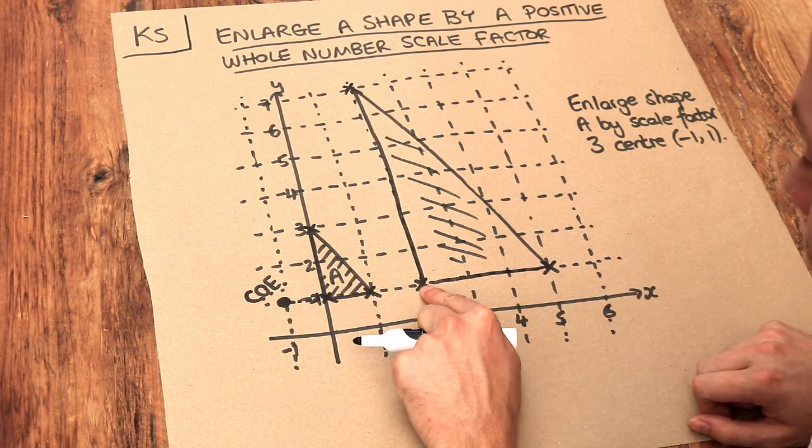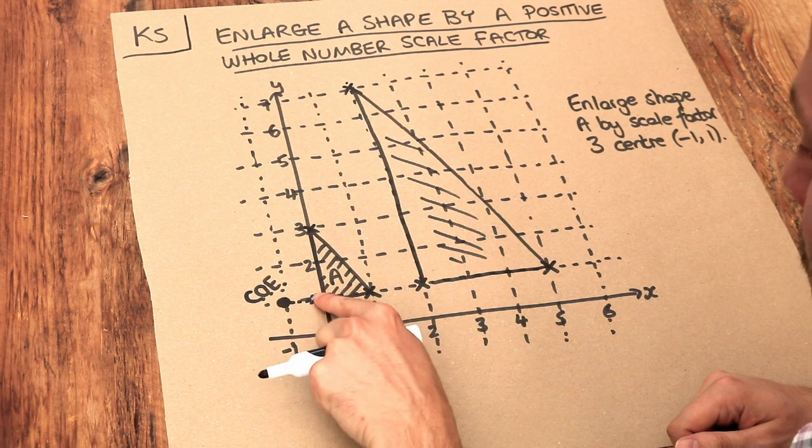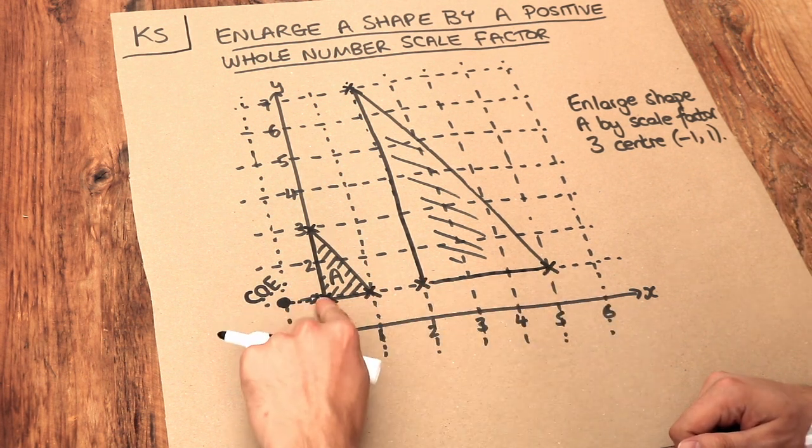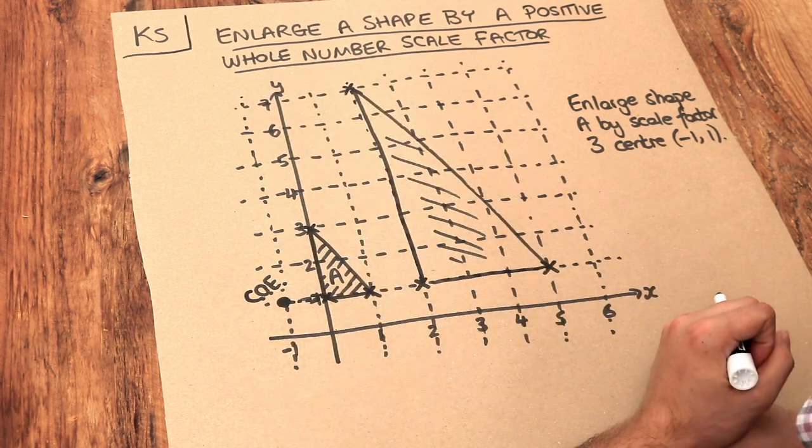So what you could do is just work out that first point using the same method as before, then say, well, I go one right from here, so I need to go three right from here. I go two up from here, so I need to go six up from here. And that would save you a bit of time.